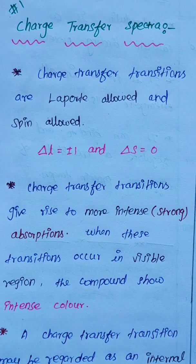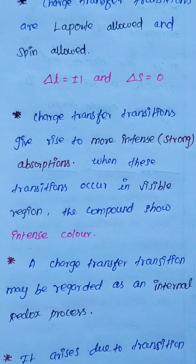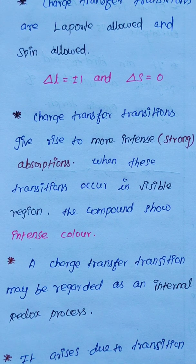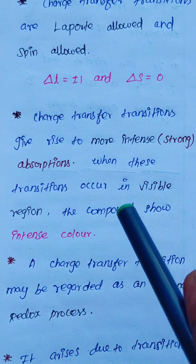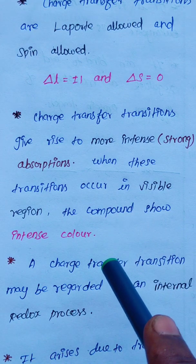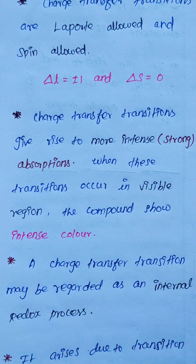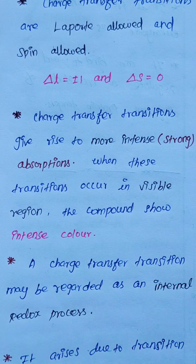The charge transfer transition gives rise to a more intense, strong absorption band. Compared to d-to-d transitions, the charge transfer spectra absorption band is much stronger. When this transition occurs in the visible region, the compound shows an intense color — a very strong absorption band, not a light color.